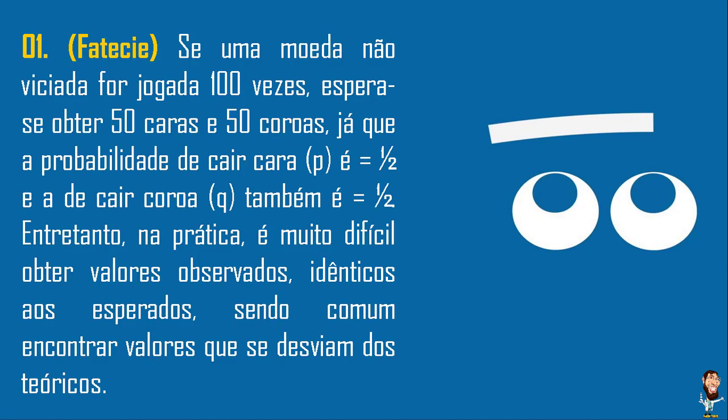Exercício 1. Se uma moeda que não é viciada for jogada 100 vezes, esperamos obter 50 caras e 50 coroas, já que a probabilidade de cair cara é meio e a de coroa também é meio. Logo, se eu tenho a moeda sendo jogada 100 vezes, eu espero 50-50.